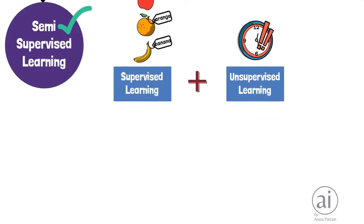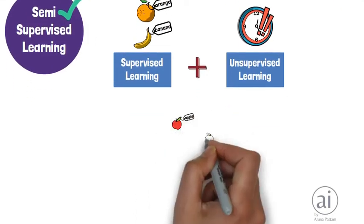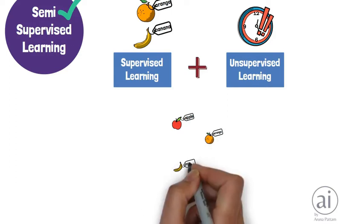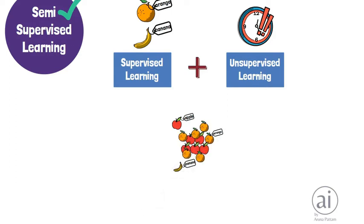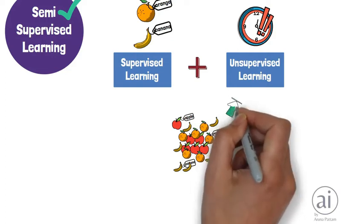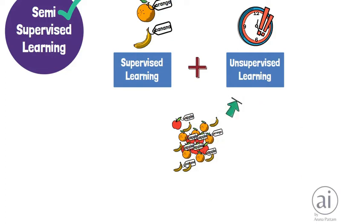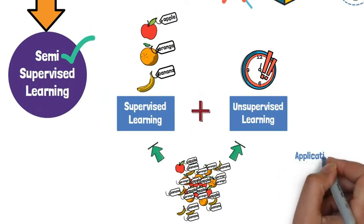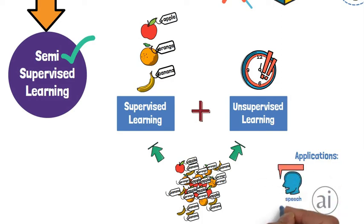In this method, we train the machine with data that is a little bit labeled but a large portion is unlabeled. We first use unsupervised learning to predict labels, and then feed these labels to supervised learning. This technique is very useful in areas like speech recognition and text classification.